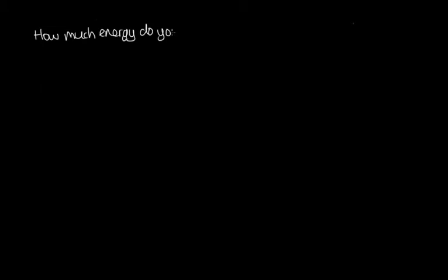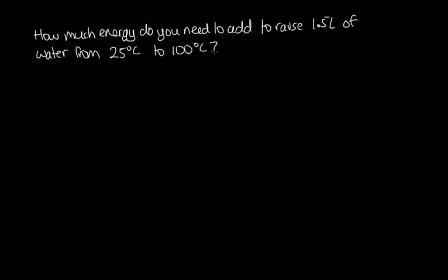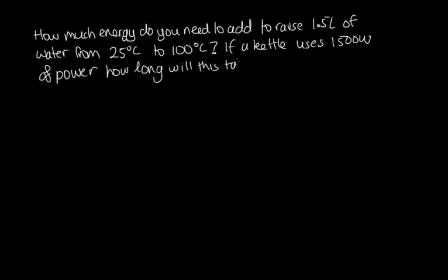How much energy do you need to add to raise 1.5 liters of water from 25 degrees Celsius to 100 degrees Celsius? If a kettle uses 1,500 watts of power, how long will this take? First of all, we need to work out how much energy is added, using the formula q = mcΔT, where m is the mass, c is the specific heat, and ΔT is the change in temperature.